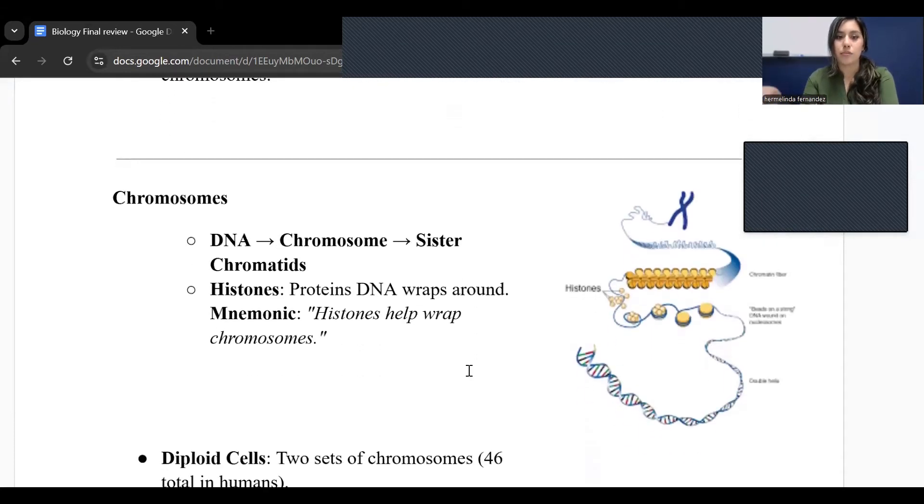Now we have chromosomes. The way this goes, it's from DNA to chromosomes and then we have sister chromatids. Histones are proteins that help DNA wrap around and make that DNA structure. So histones help chromosomes by wrapping around chromosomes. Think of a birthday present or a Christmas present - you're wrapping around it to make the big DNA.